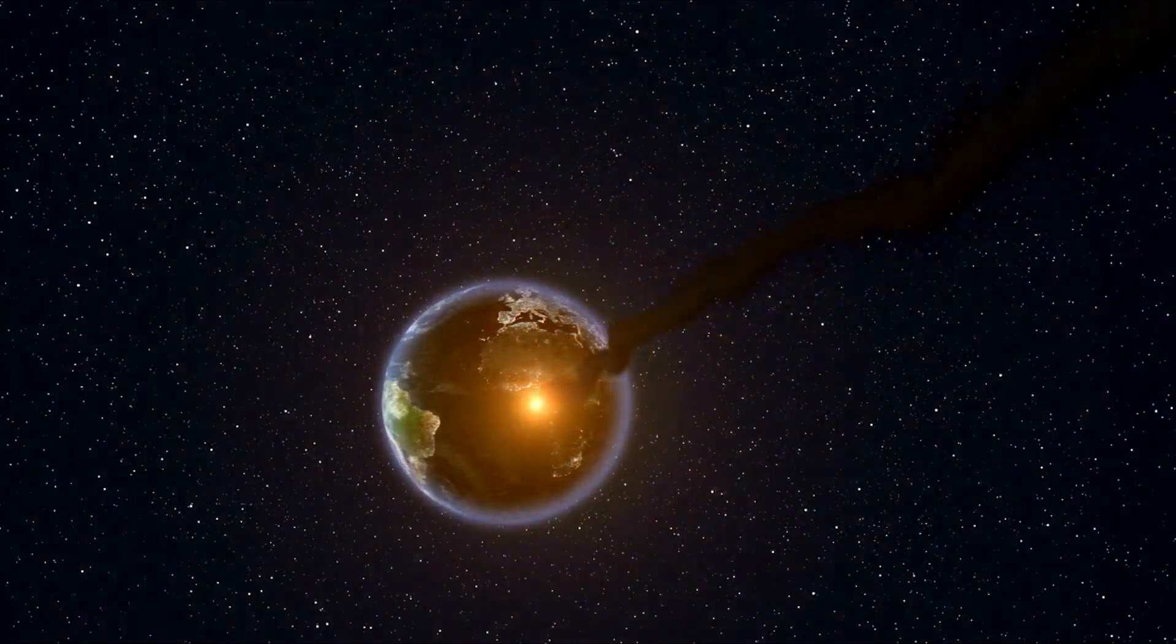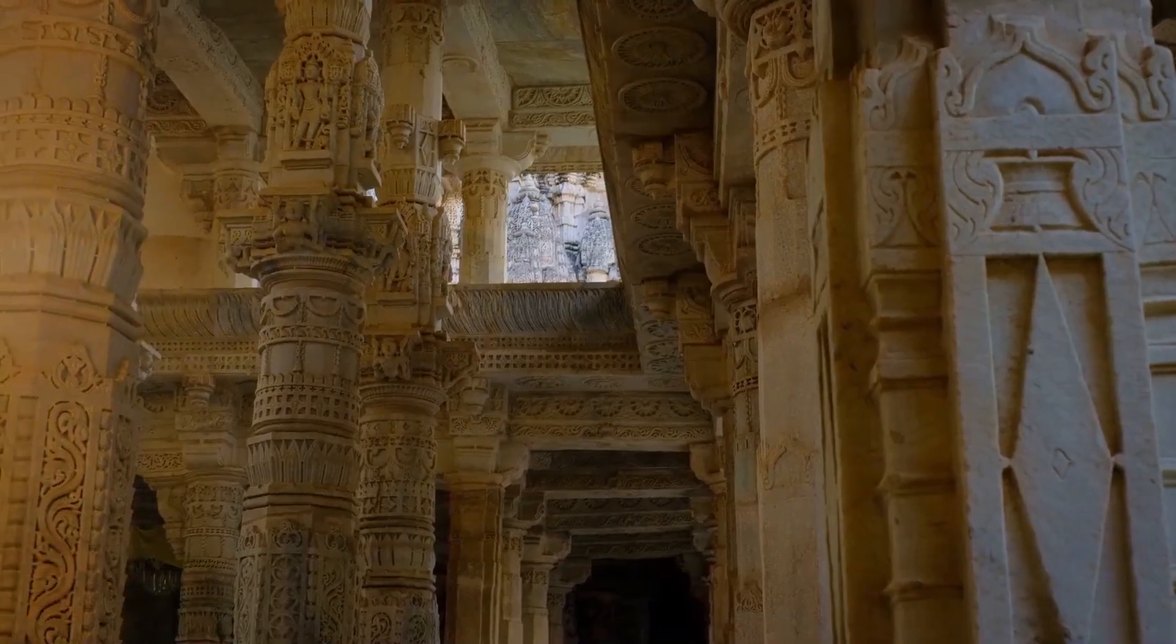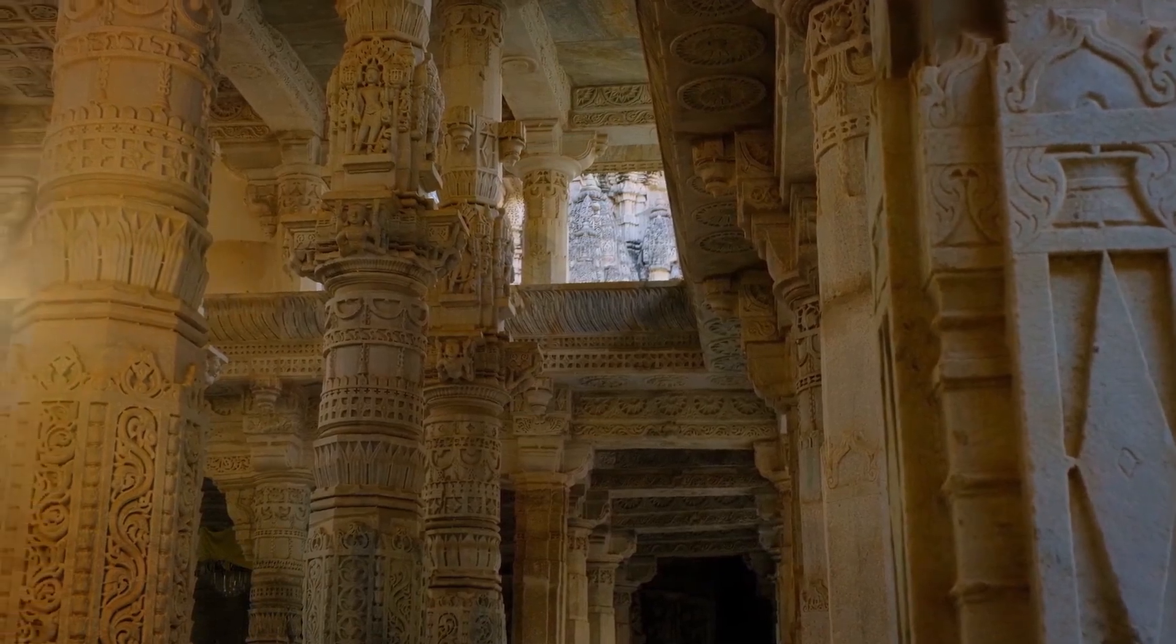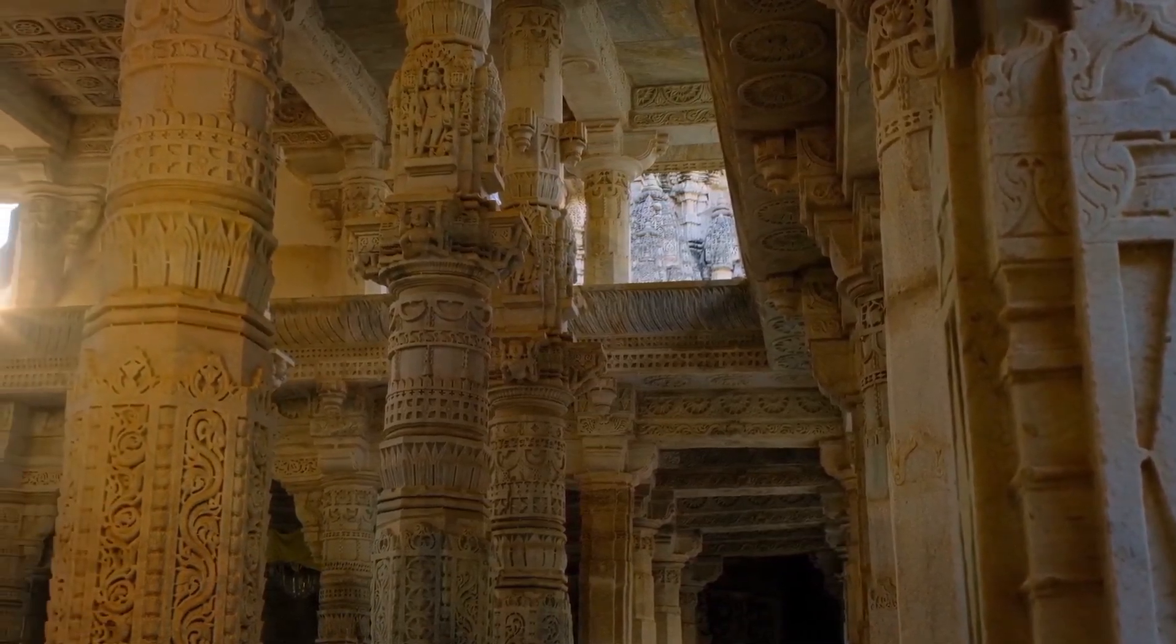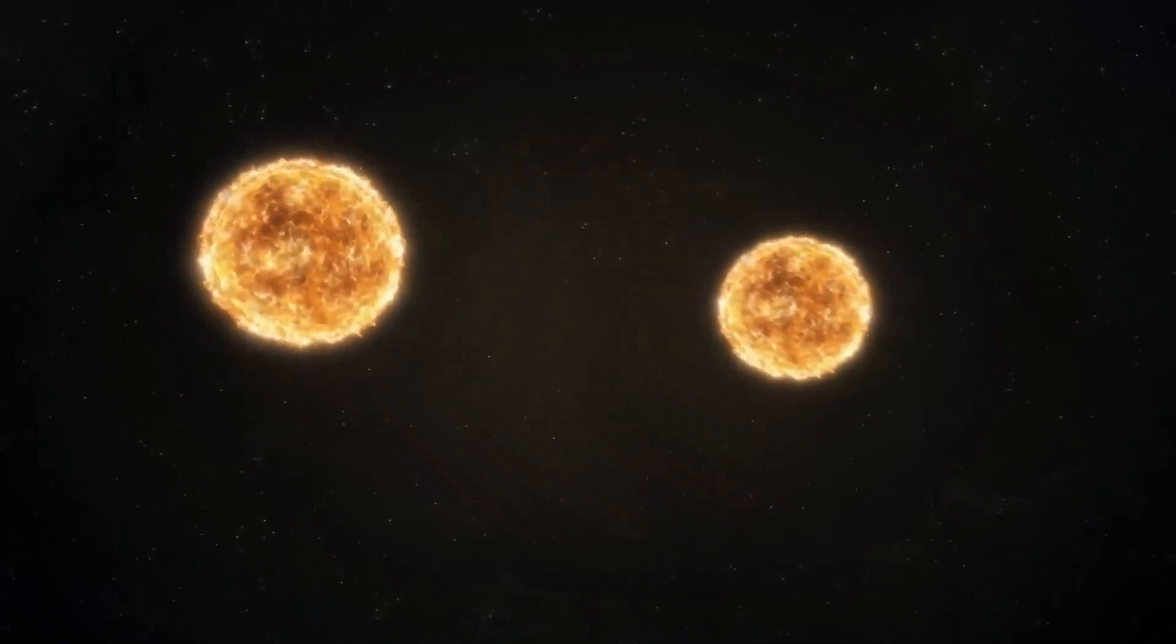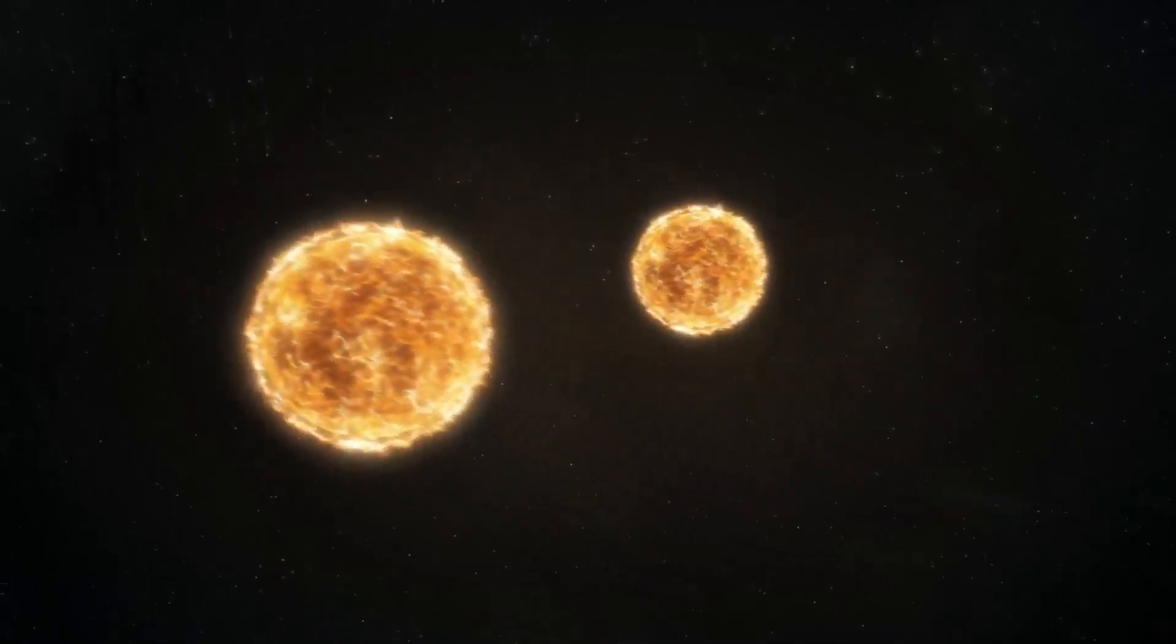One of the most recognizable images from the Hubble Space Telescope has long been the pillars of creation in the Eagle Nebula. While Hubble primarily detects visible light, it could not capture the process of star formation within these structures. However, the James Webb Telescope's infrared imaging has now revealed clusters of protostars appearing as tiny red dots against the background of the pillars. These forming stars, several times larger than our solar system, are still in the process of gathering mass.